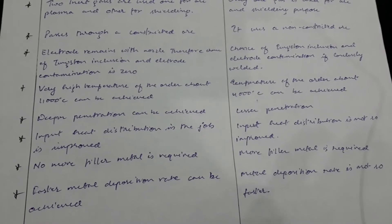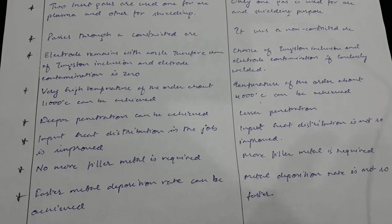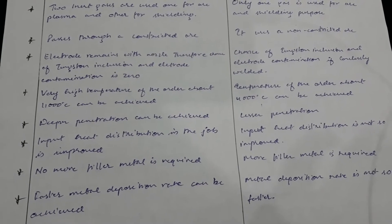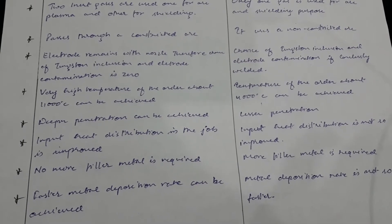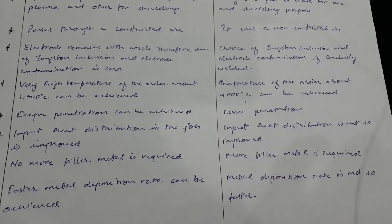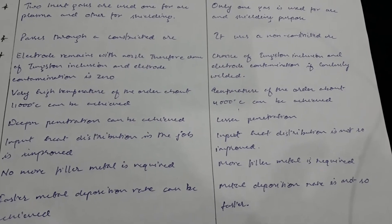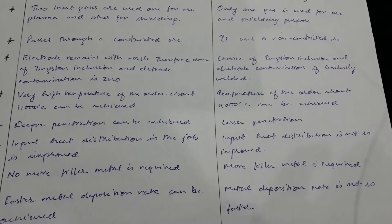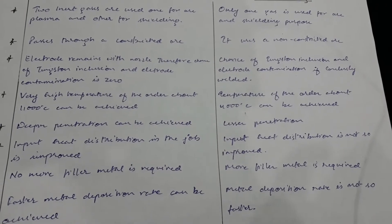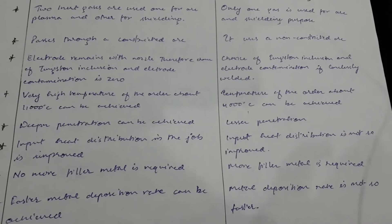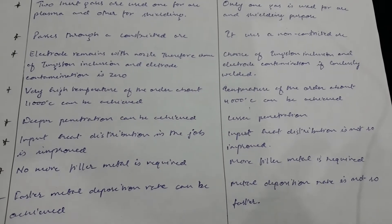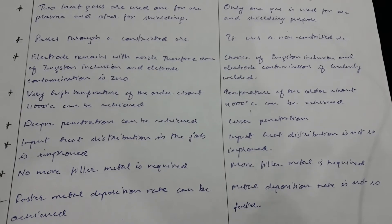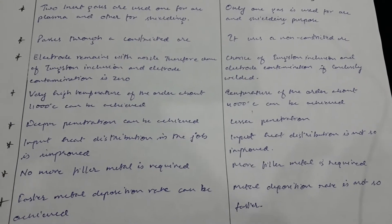The third point is that in plasma arc welding the electrode remains within the nozzle, therefore the chance of tungsten inclusions and electrode contamination is zero. In TIG welding, there is a chance of tungsten inclusion and electrode contamination if welding is performed carelessly or in an improper manner.